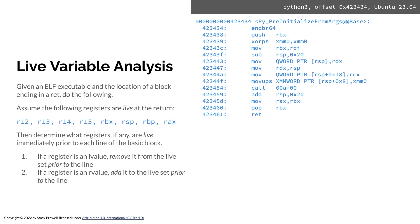The set we're going to start with is R12, R13, R14, R15, RBX, RSP, and RBP. You should recognize those as the registers you're supposed to preserve across function calls. In addition, RAX is in that list because that's your return value. So you can think of those as the outer context in which the program runs.